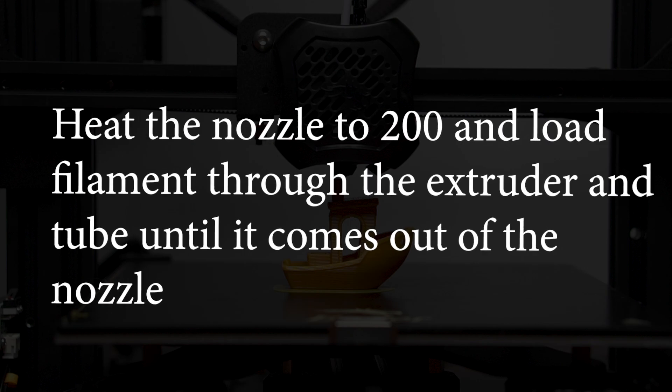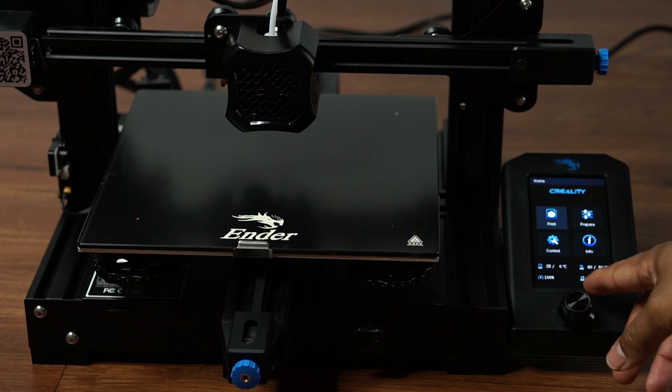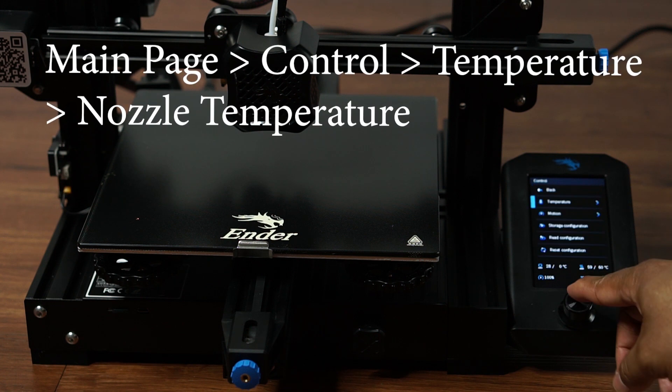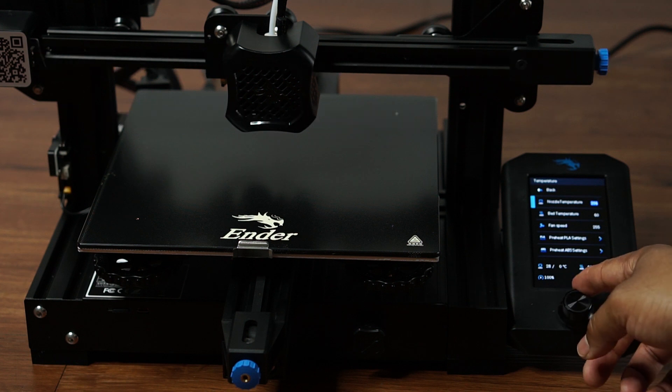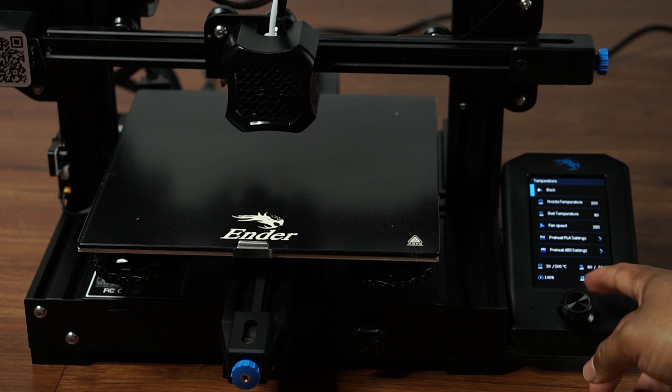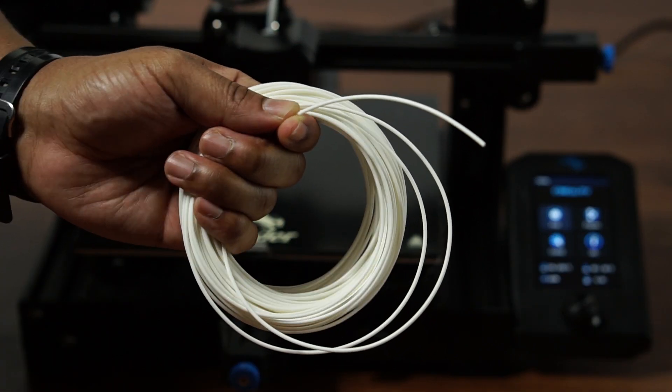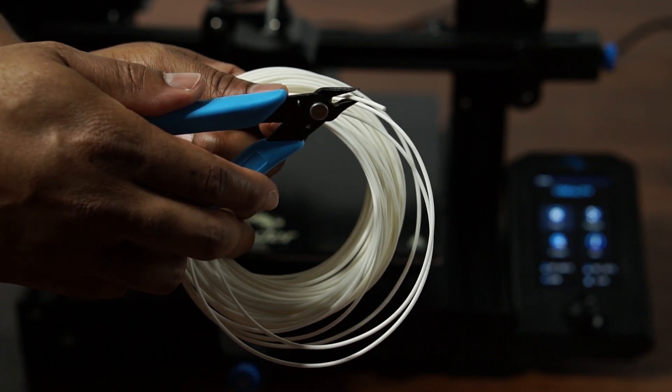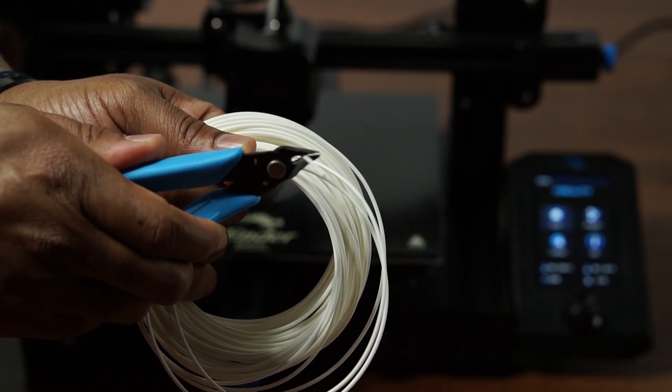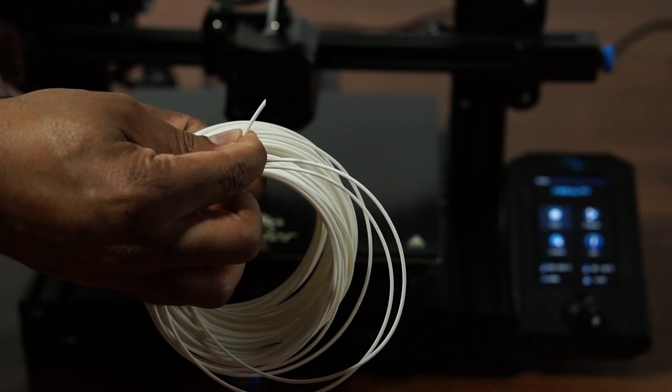Next you want to heat up your nozzle to 200 degrees and load your filament. So here's the sample filament that came with the printer, and before you actually load the filament you want to use your flush cutters to cut the end of the filament at an angle to make it easier to insert it into your PTFE tube and feed it through to your nozzle.